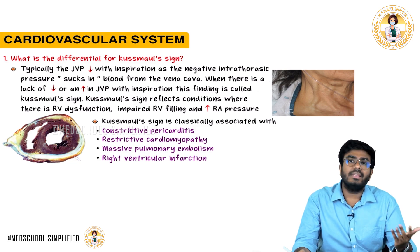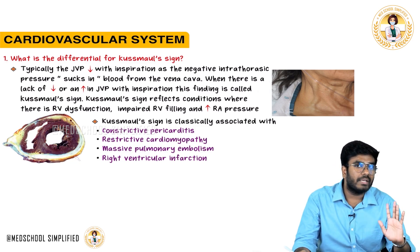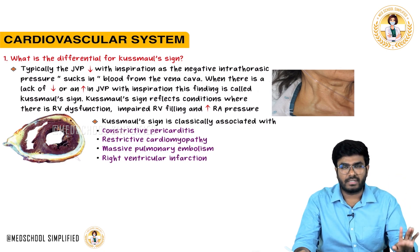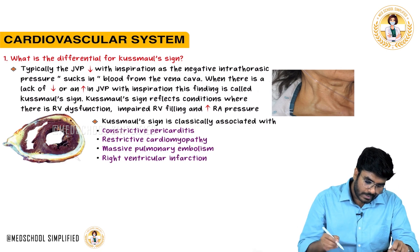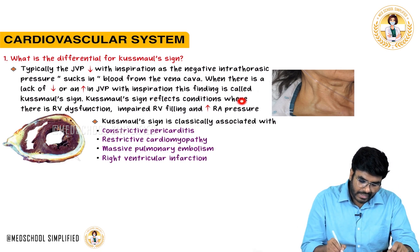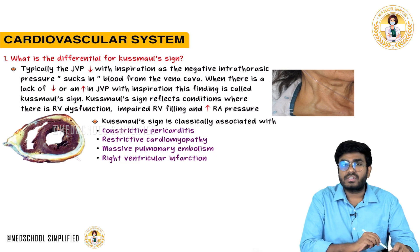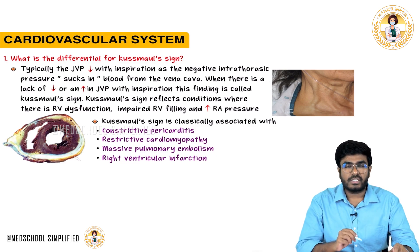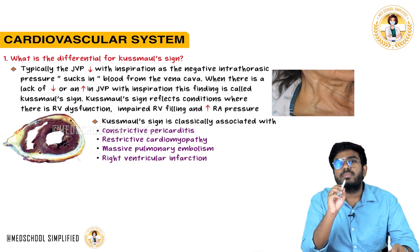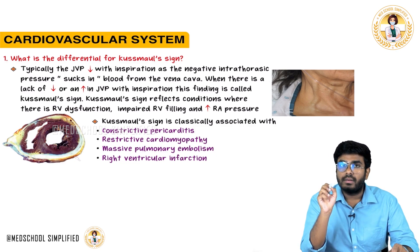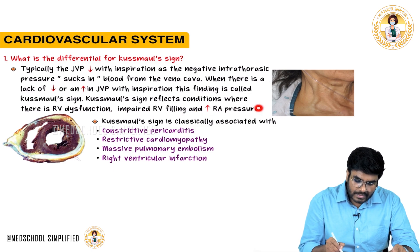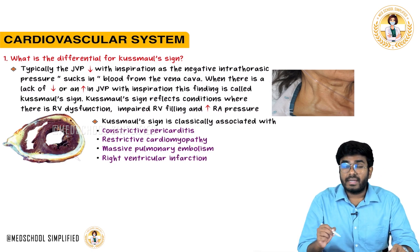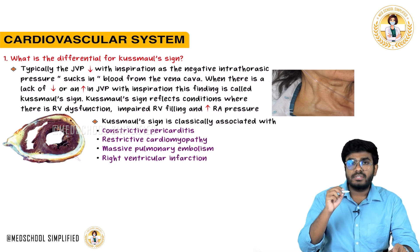We are not discussing Kussmaul breathing here. Kussmaul breathing is seen with diabetic ketoacidosis — that's a breathing pattern, it is different. What I am discussing is Kussmaul sign. Kussmaul sign reflects conditions where there is right ventricular dysfunction. With inspiration, jugular venous pressure is not going to go down — rather, sometimes it is going to increase. This reflects impaired right ventricular filling and increased right atrial pressure. If right atrial pressure increases, automatically jugular venous pressure increases.